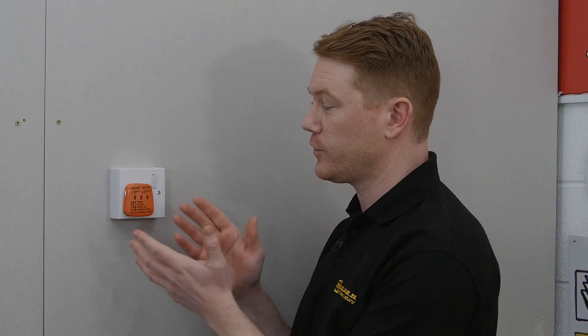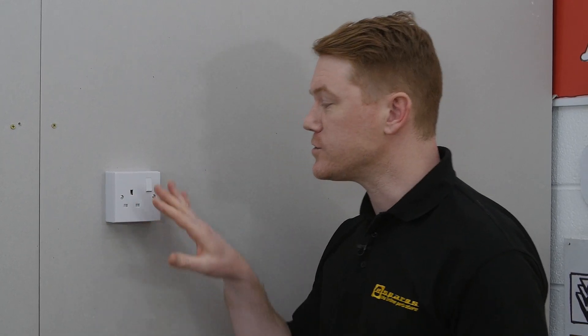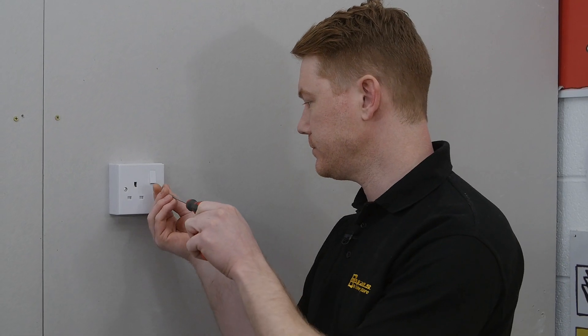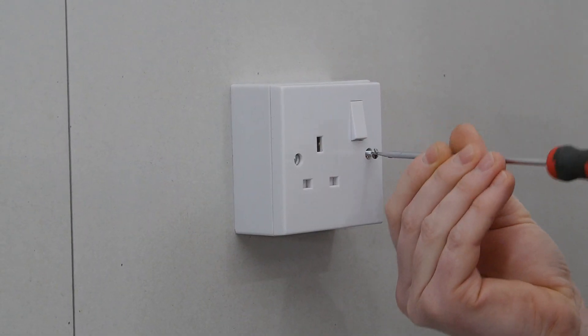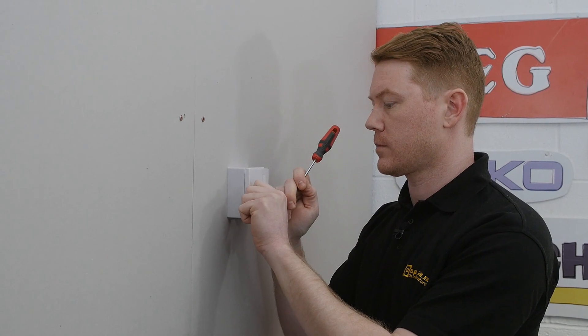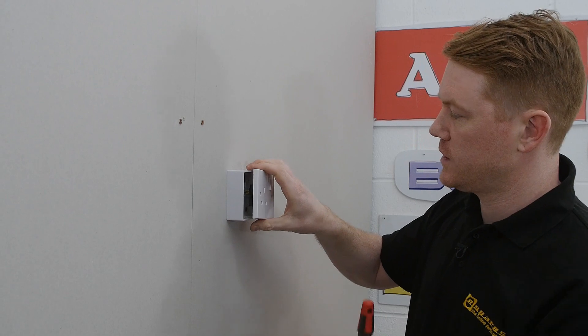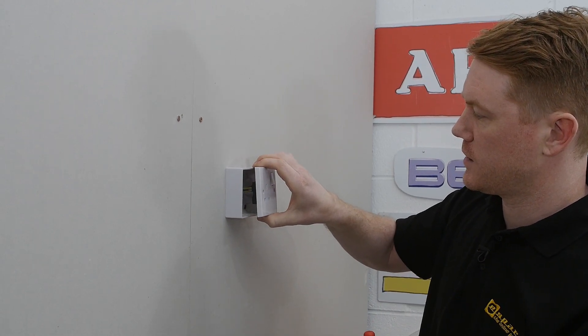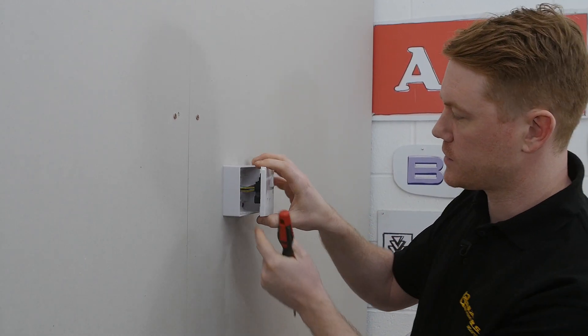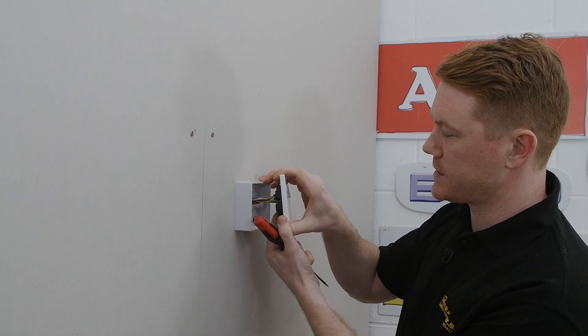With the power turned off to the socket, I can remove the socket tester and unscrew the front face of the socket itself. With both screws removed, I'm just going to carefully pull on the front of the socket so I can show you the wiring behind and access it easily.